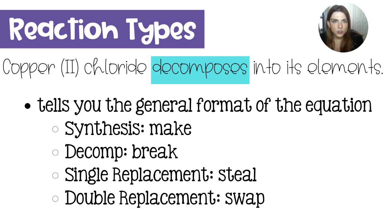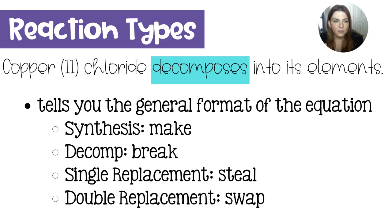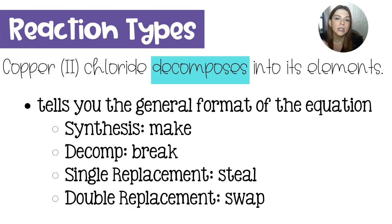In a synthesis reaction, you may get the keywords 'make' or 'form.' Something is synthesized — that could also work. But if it says copper 2 chloride is synthesized, then that means copper 2 chloride would be the product, not the reactant.